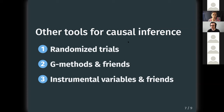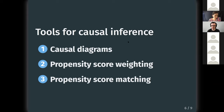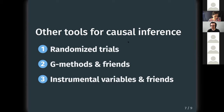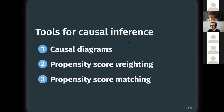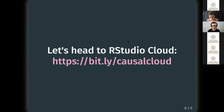Randomized trials and g-methods tend to appear more in individual-level health research. These methods are all closely related — they come from the same basis of causal inference. They're like brothers and sisters that don't always get along, but if you take a bigger picture you see they come from the same foundation. We're picking causal diagrams and propensity score weighting because we like them and they're very useful.